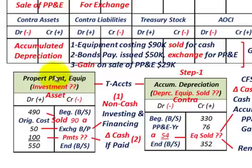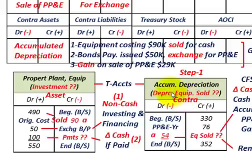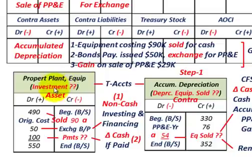So let's look at how we calculate our non-cash and cash transactions. Dealing with our investments, we've got two accounts to deal with: the property, plant and equipment account — that's our asset account — and our accumulated depreciation, which is the contra-asset account. I've got it laid out in T-account form here, which is really the easiest way to determine what's going on in your long-term asset account.